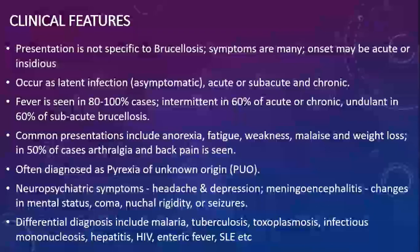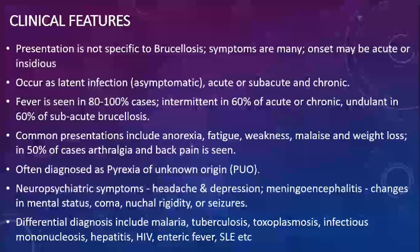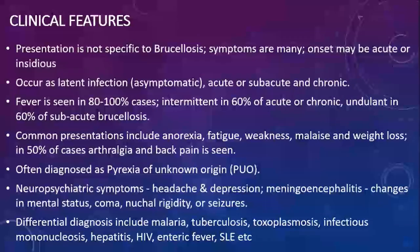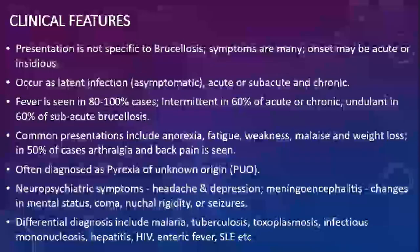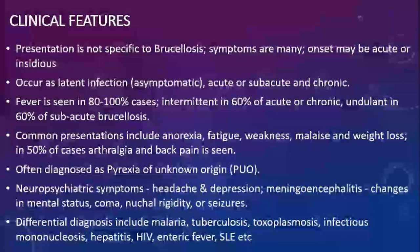One of the most characteristic presentations is fever, seen in 80–100% of cases. In acute or chronic conditions it may be intermittent; in 60% of subacute cases it is undulant — rising and falling. Typical symptoms including anorexia, fatigue, weakness, malaise, and weight loss are not specific to this disease, as they are associated with many other diseases, which is why diagnosis becomes difficult and the disease is often misdiagnosed.